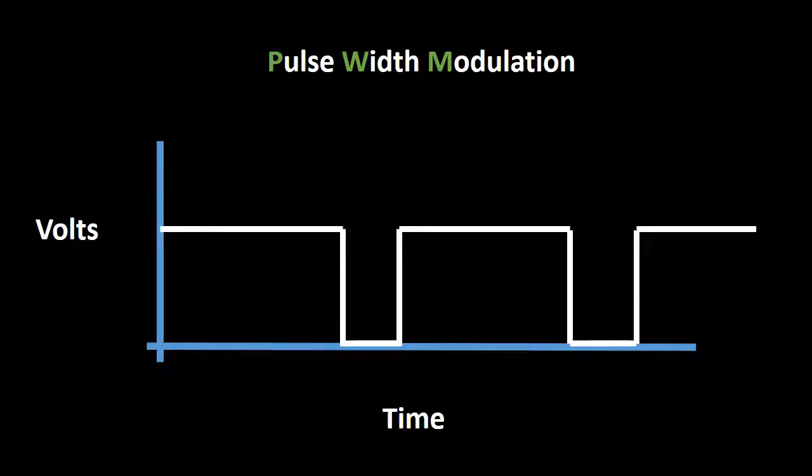If we now switch it on for three quarters, and off for the remaining quarter, the average rises to 75% of the DC input.